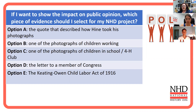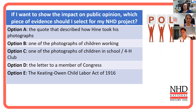Here's the question: if I want to show the impact on public opinion, which piece of evidence should I use in my NHD project? Option A is the secondary source quote describing how Hine took the photographs. Option B is a photograph of children working. Option C is a photograph of kids in school or a 4-H club. Option D is the letter to Congress. Option E is the law itself. If you had to pick one, what is the best one to use?